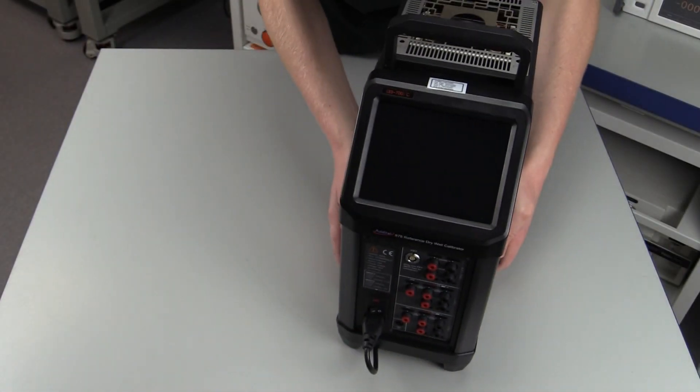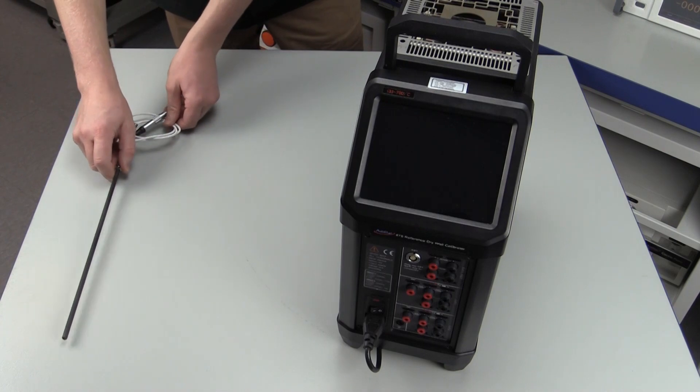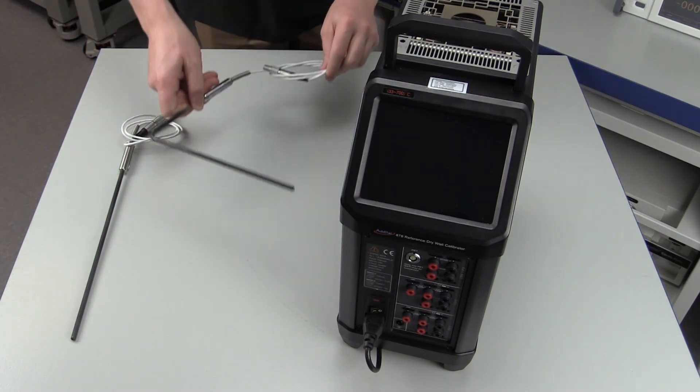To begin, all you will need is the Additel 878-700 reference drywell calibrator and your reference PRT or PRTs that you would like to anneal. In this case, we will anneal two probes simultaneously.